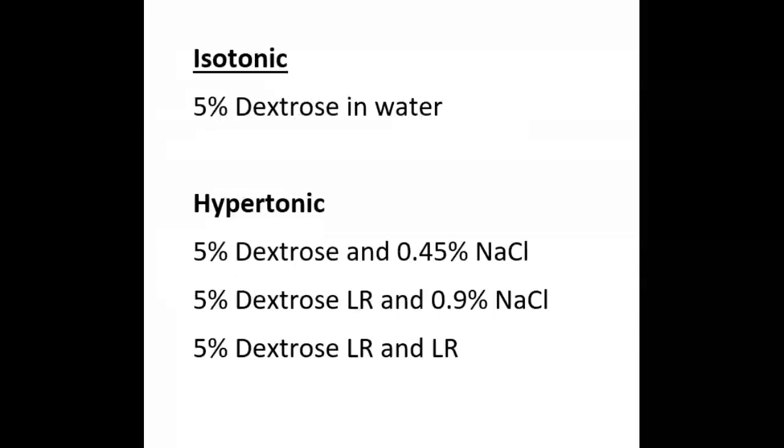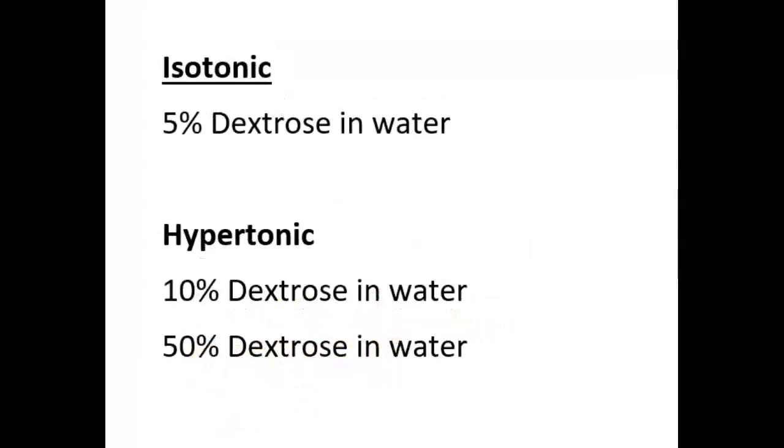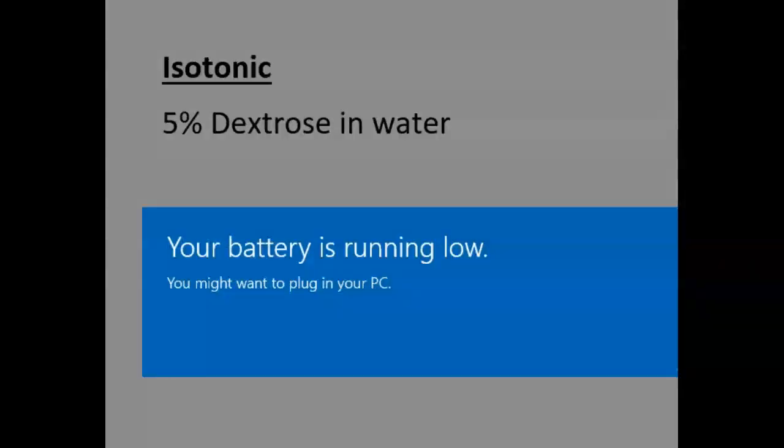In regards to the dextrose solutions, we know that our isotonic solution is 5% dextrose in water. So if I have 5% dextrose combined with anything other than water, that's going to make it hypertonic. Because these other combinations, we're adding things with solutes, making it hypertonic. Isotonic: 5% dextrose in water. Hypertonic: 5% dextrose with anything other than water - half normal saline or 0.5% sodium chloride, 5% dextrose in normal saline (0.9% sodium chloride), or 5% dextrose in lactated ringers. Anything higher than 5% dextrose in water, like 10% or even 50% dextrose in water, would be considered a hypertonic solution.